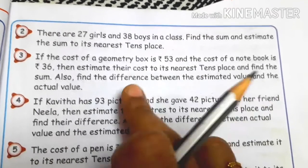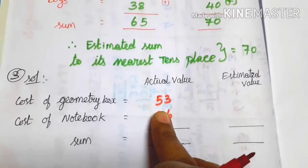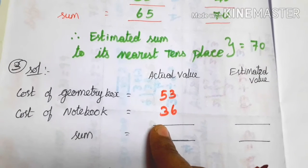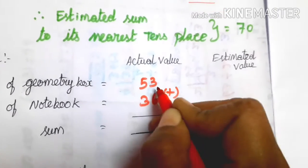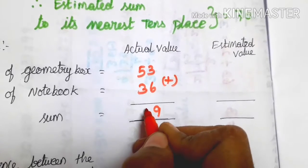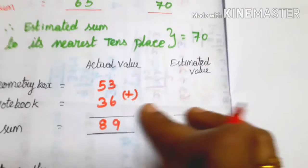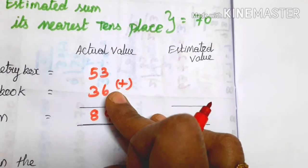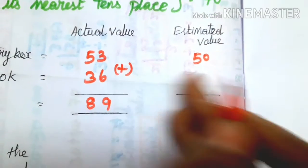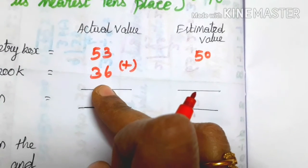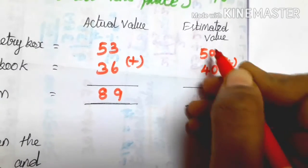You will subtract to find the difference. Now estimate: 53 compared to 55 — 53 is a smaller number, so it rounds down to 50. For 36 compared to 35 — 36 is a greater number, so it rounds up to 40. Adding the estimated values: 50 plus 40 gives 0 in ones, and 5 plus 4 is 9, so the estimated sum is 90.